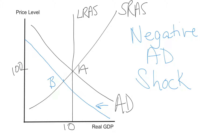Here we are at point B. Some reasons this might have happened: a decrease in confidence among consumers or businesses, causing them to cut back consumption or investment. Now at point B, it's time for the automatic adjustment mechanism. The mechanism is always the expectation of the price level driving the correction — it's always the short-run aggregate supply curve adjusting to the shock. We were happily at point A, woke up at point B with lower prices, and the economy is in a recession — we're below potential GDP, not using all our resources, and we have unemployment.